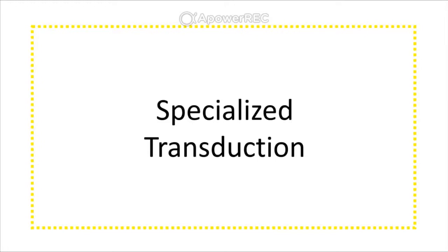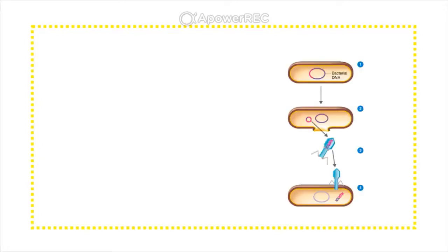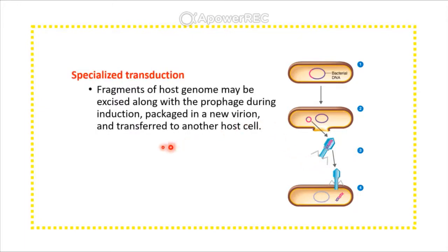Specialized transduction: some viruses have a lysogenic phase where they assimilate their DNA into the bacterial chromosome and become a prophage. When this viral DNA becomes activated to continue its replication cycle, a copy of the viral DNA is made, but it can also pick up some bacterial DNA and package it into the virus. The virus can then infect a new host, transferring that bacterial DNA from one bacterium to another — this is called specialized transduction.